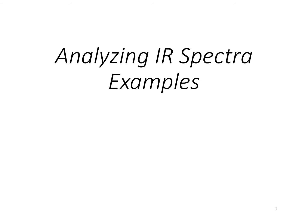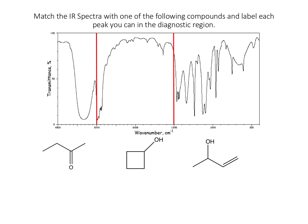This is our last video on IR spectroscopy, and we're going to look at some example problems of analyzing IR spectra. This is pretty typical of how I'll often ask problems about IR spectroscopy. I'll give you some IR spectra and some molecules, and then I'll ask you to match the spectra with the molecules, and also to label all of the peaks you can in the diagnostic region of the IR spectra.